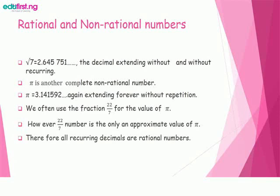We often use the fraction 22/7 for the value of pi. However, 22/7 is only an approximate value of pi. Therefore, all recurring decimals are rational numbers.